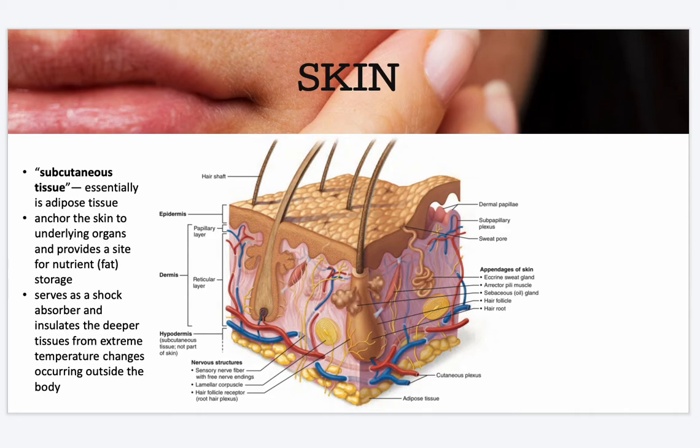We also have your subcutaneous tissue, which is essentially adipose tissue — adipose means fatty tissue. It anchors the skin to your underlying organs and provides a site for fat storage. It also serves as a shock absorber and insulates deeper tissues from extreme temperature changes occurring outside your body.